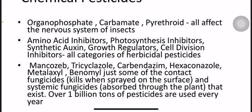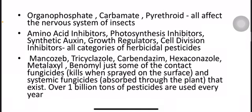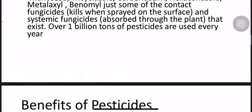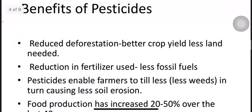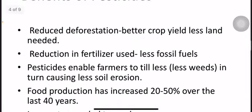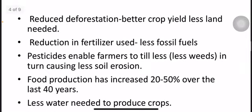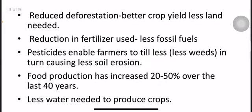Some pesticides kill when spread on the surface. Over one billion tons of pesticides are used every year. Benefits of pesticides include reduced deforestation, higher crop yield, less land needed, reduction in fertilizer use, and less fossil fuel consumption. Pesticides enable farmers to till less land, which in turn causes less soil erosion.